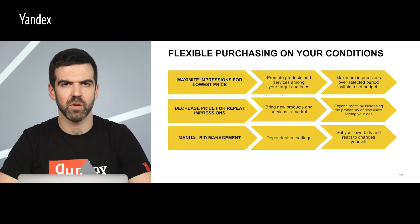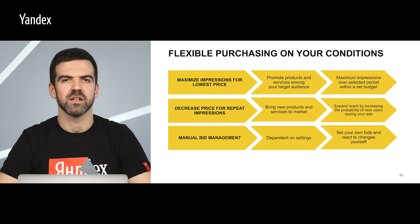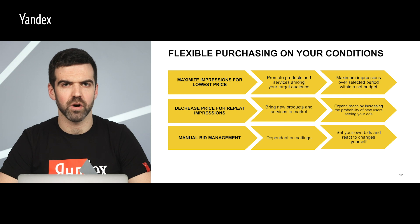Display campaigns offer the following bid management strategies. First, the automatic strategy Maximum Impressions for Lowest Price helps promote products and services among your target audience — you set a budget and the system ensures that you get as many impressions as possible over the chosen period while remaining within your budget. Second, the automatic strategy Decrease Price for Repeat Impressions is ideal for bringing new products or services to market. By lowering bids for users who have already seen your banner, you spend less of your budget on repeat impressions.